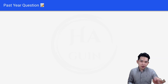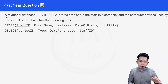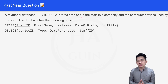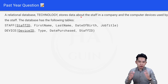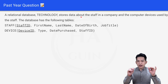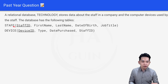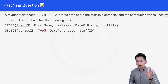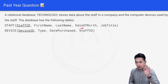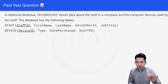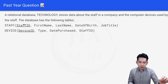Now let's look at a practice question to test your understanding. An original database stores data about staff, company, and computer devices used by the staff. The staff table has: staffID, firstName, lastName, dateOfBirth, and jobTitle — staffID is the primary key.